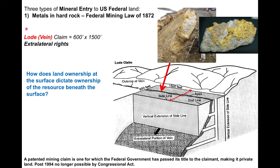Regarding extralateral rights: if you have a claim to a land surface and you start mining the vein at the surface, you can build underground infrastructure to continue mining it at depth. If a neighbor owns the adjacent claim and that vein does not intersect the surface of their claim, they cannot build underground infrastructure to access that mineral.